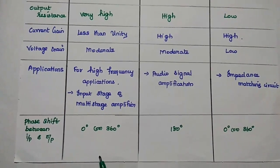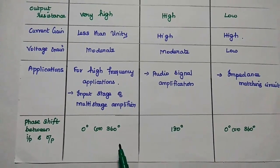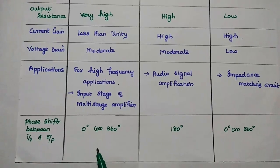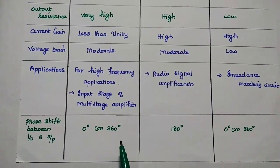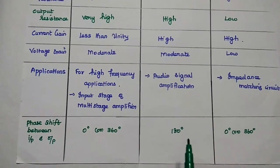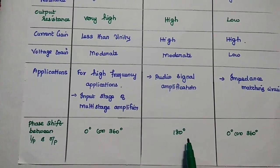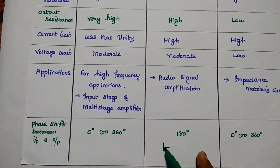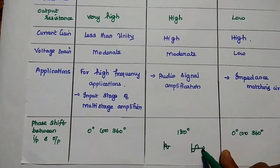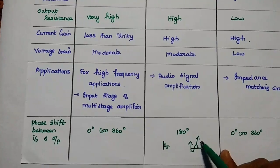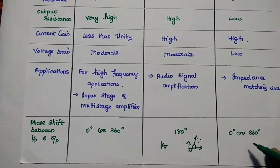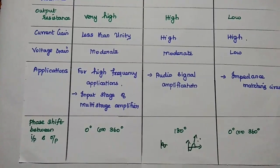The next parameter is the phase shift between input and output. For common base, there is no difference between input and output phase — it has 0 degree or 360 degree phase shift. For common emitter configuration, it gives 180 degree phase shift, meaning the output signal is phase-inverted relative to the input. This phenomenon is used in audio amplification. For common collector, there is no change in phase.